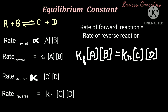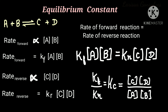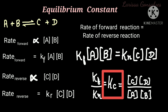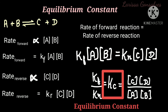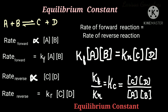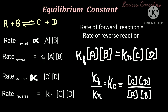Now we divide the two sides. We get KF divided by KR, which equals KC. KC is called the equilibrium constant, which equals concentration of C times concentration of D divided by concentration of A times concentration of B.